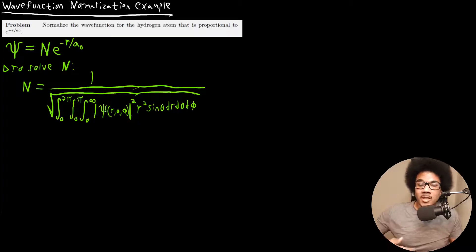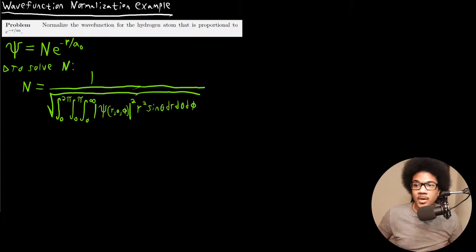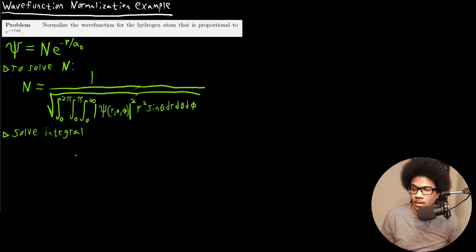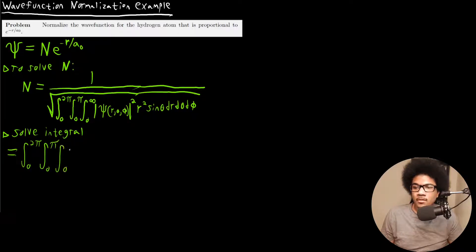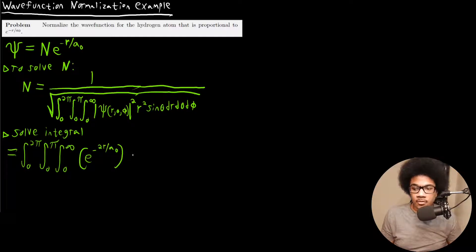So N is going to be equal to this. The integral in the denominator we need to solve — it may look daunting at first, but it gets simpler. We have the triple integral from 0 to 2π, 0 to π, 0 to infinity. Squaring the wave function: e to the negative r over a-naught squared gives us e to the negative 2r over a-naught, which is our probability distribution. Then everything else — r², sin(θ), dr, dθ, dφ — comes along for the ride.